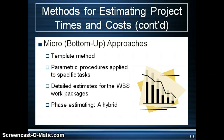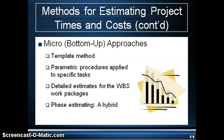Range estimating is generally used when there is unfamiliarity with the work needed or if it involves new technology. It's a popular method with software projects or developing new products. The group will give a low, average, and high estimate, which provides a range to work with. This helps reduce surprises that may come up due to ambiguity in work packages. Essentially, these estimates are developed from the details in the work packages in your work breakdown structure.